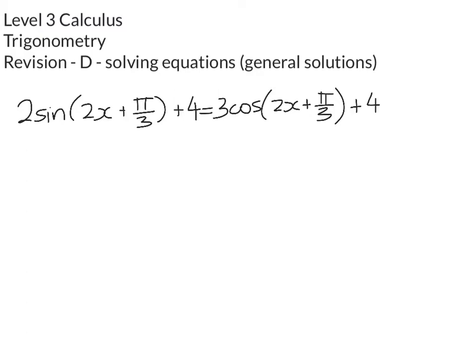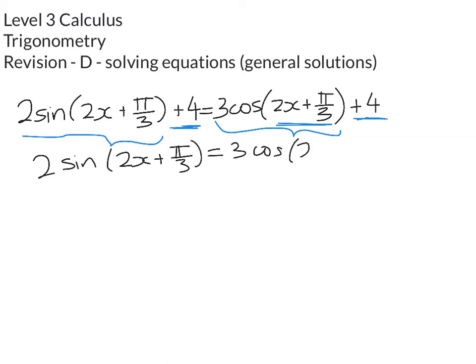So we've got on the left hand side 2 sine of 2x plus π on 3 plus 4, and on the right we've got 3 cos of the same thing plus 4. So the first easy thing to do is going to be to subtract 4 from both sides. Make sure as usual you've got your pen and maths book with you. You're not going to get much out of this just by listening to me rabbiting on. So let's do that bit together and now pause the video and take a look and try to figure out the next little step.